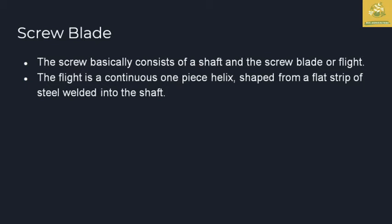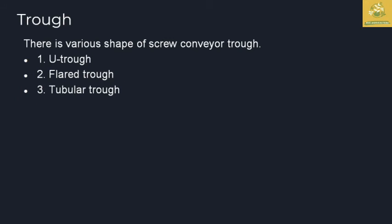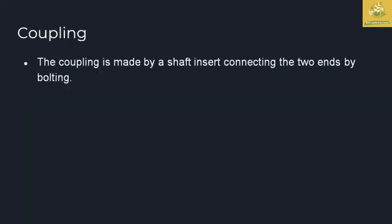The screw blade is included on the shaft. This is the same part of the screw shaft, and it is made of metal. If it is in the middle of the screw shaft and you want to move the machine in the conveyor, it will be very helpful. There are three types of troughs: U-shaped, flat-bottom, and tubular troughs.